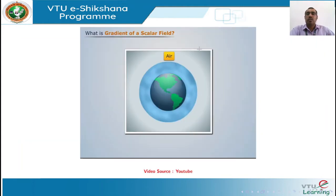What is the physical significance of this gradient? The gradient of a scalar function always points in the direction of maximum variation of the scalar function, and the magnitude gives the rate of maximum variation in that direction. Let us watch a video to understand this better.